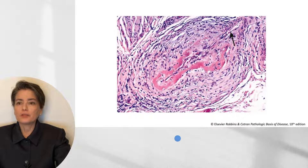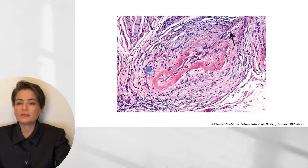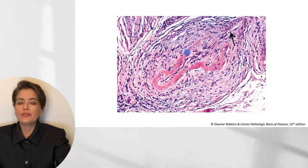Here is an example of polyarteritis nodosa. You can see the healthy vessel wall on one side, and the area overwhelmed by inflammation with abundant inflammatory cells. This is the characteristic fibrinoid necrosis that we associate with polyarteritis nodosa.